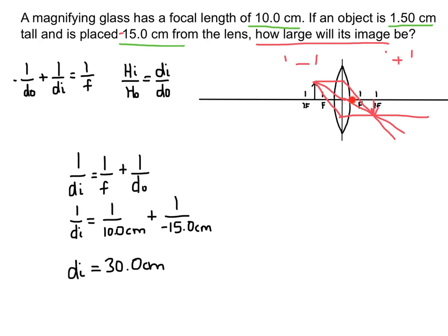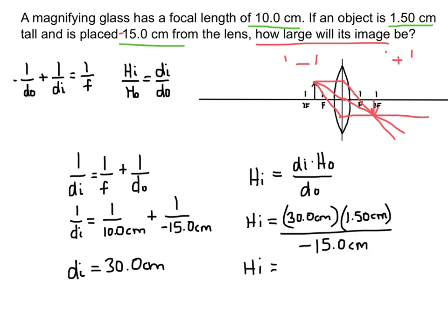The image distance of 30 centimeters is positive, so the image is on the positive (right) side — it's a real image. Plugging everything into the second part of the equation to find image height, I rearrange to solve for h_i, being careful with signs. The object distance is negative, and I end up with negative 3 centimeters. The negative sign means the image is inverted — upside down. So this image would look really weird: upside down and larger. This is not what we'd expect a magnifying glass to do, because this object was placed beyond the focal point.